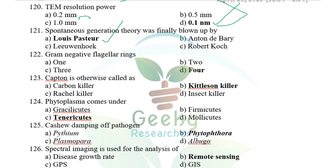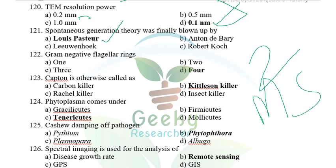Gram-positive bacteria contain two flagellar rings (M and S); gram-negative bacteria contain four rings (L, P, M, S). They asked how many rings gram-negative bacteria have — the answer is four. Captan fungicide is otherwise called Kittleson (after its inventor Kittleson in 1952).